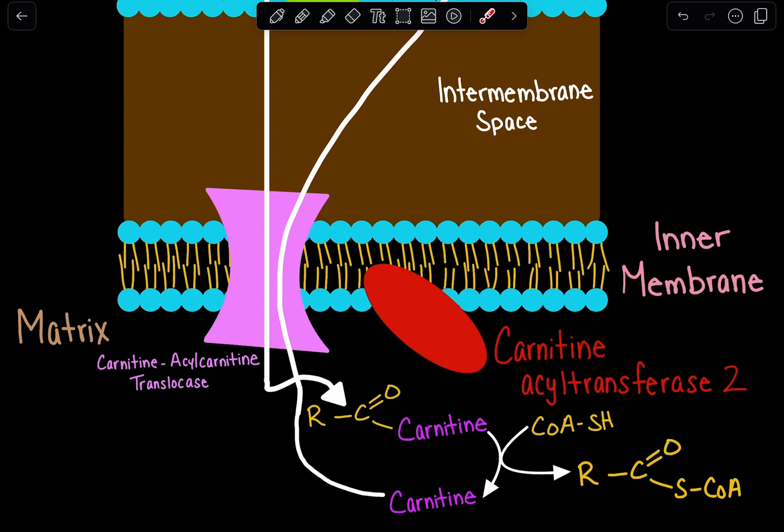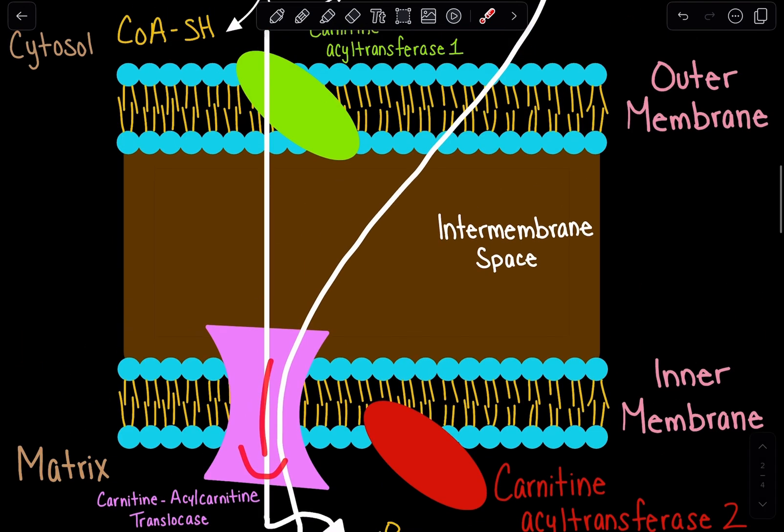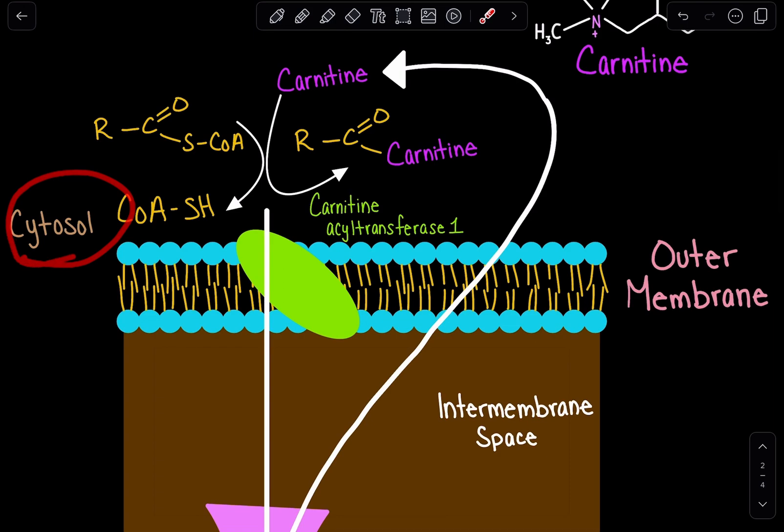That is why this protein transporter is a translocase, a carnitine acyl-carnitine translocase, because it can move both carnitine when it is done being used and bring it back out, and it also brings in acyl-carnitine from the cytosol.